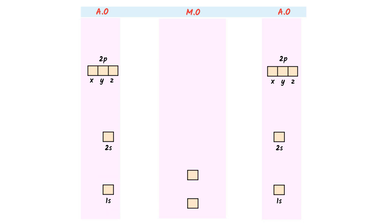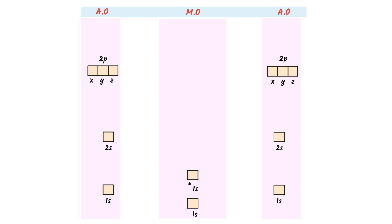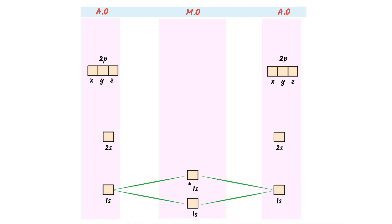I write 1s and 1s. This is the bonding molecular orbital and it has lower energy, while this is the anti-bonding molecular orbital and it has higher energy. Due to higher energy, I put a star on this anti-bonding molecular orbital. These bonding molecular orbitals are formed from atomic orbitals, so I draw two lines from them.